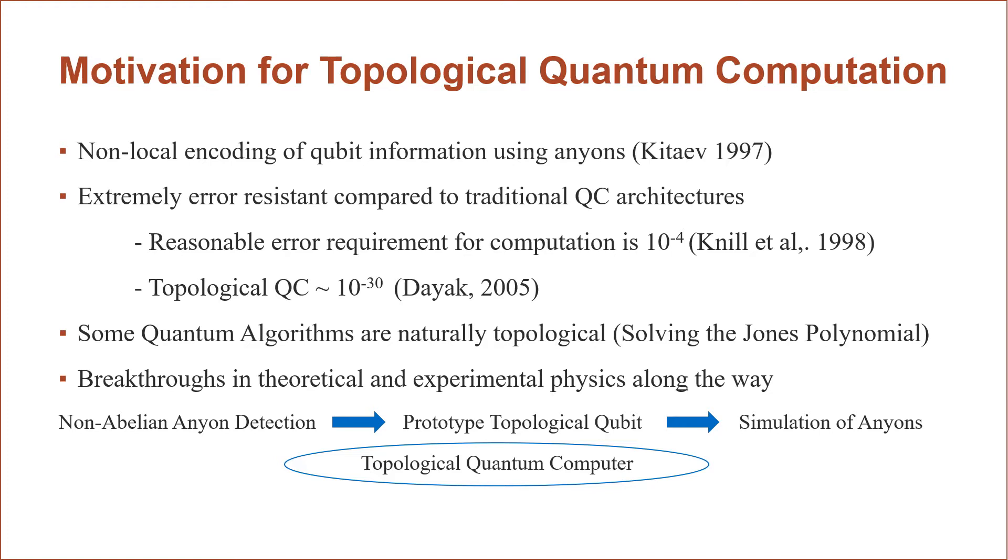This non-locality is the key difference between quantum computational devices and traditional architectures that use, for example, superconductivity or phase. This can be seen in the statement by Dyack in 2005 that for some quantum gates, topologically there will be an error percentage per gate of as low as 10 to the negative 30, which vastly exceeds the requirements set by Knill in 1998, and also dwarfs competing architectures.